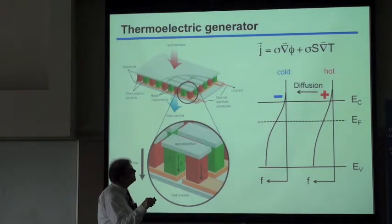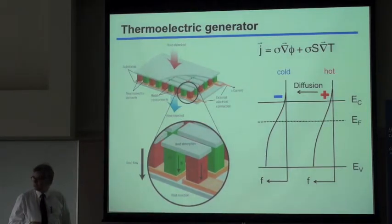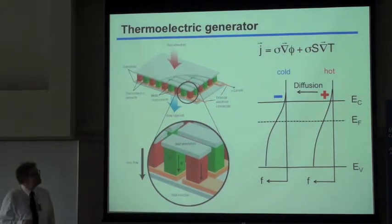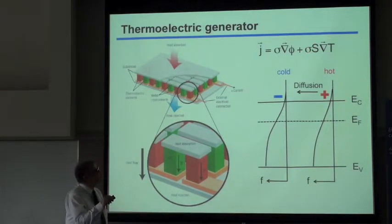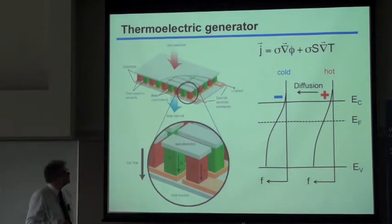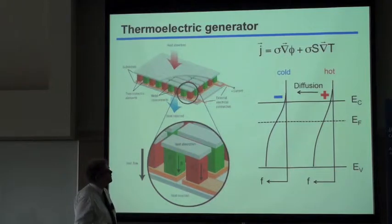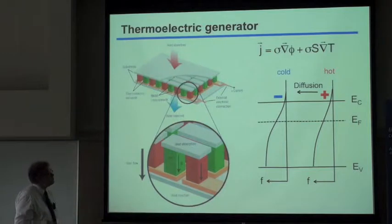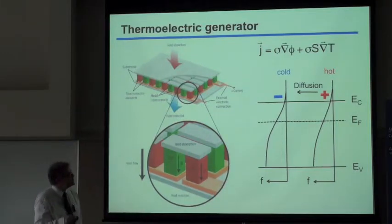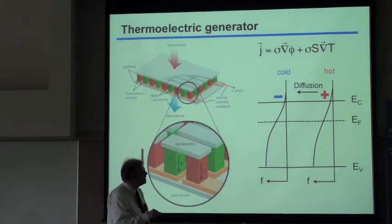With a gradient in temperature and the Seebeck coefficient, we can generate a potential difference, which via the conductivity can drive an electric current. Where does this potential difference come from? This is a sketch of a simplified band diagram of a semiconductor with the conduction band minimum, the valence band maximum, and a Fermi level — here indicated as an n-type semiconductor, so it's above the middle of the band gap.